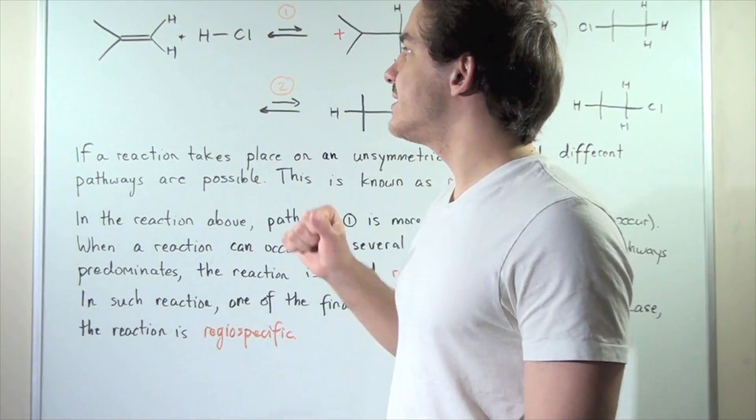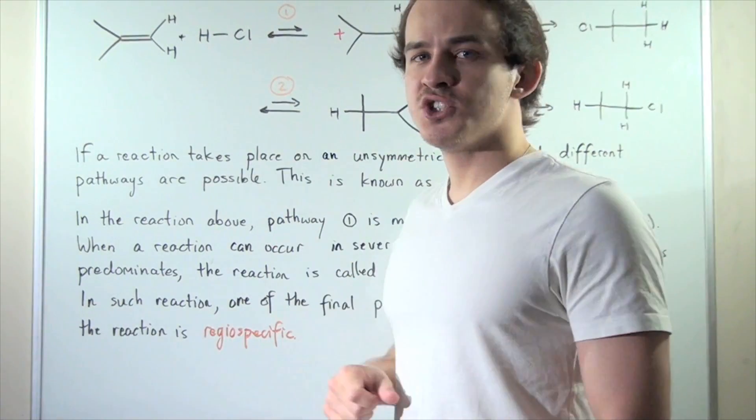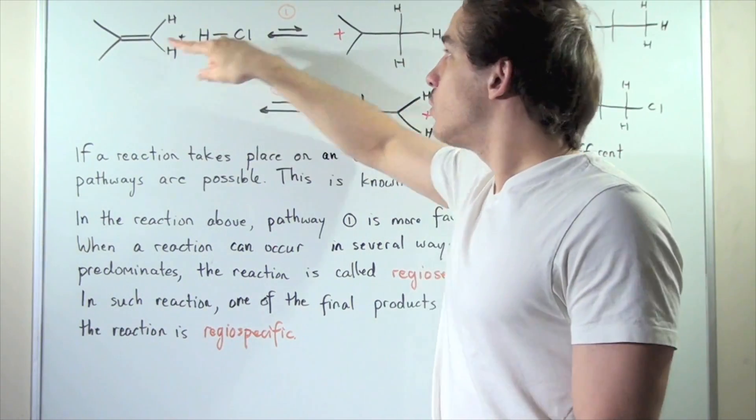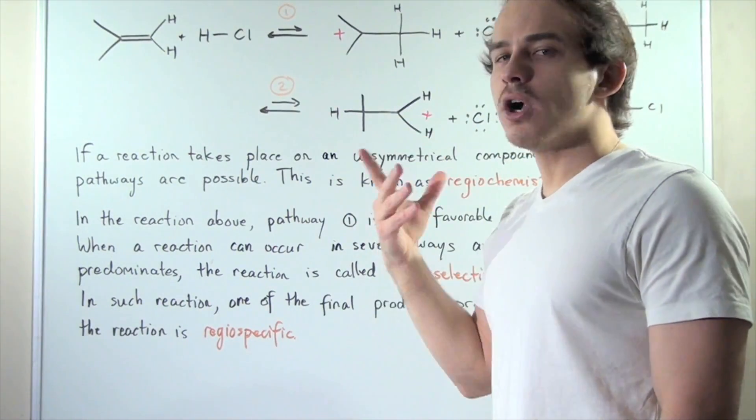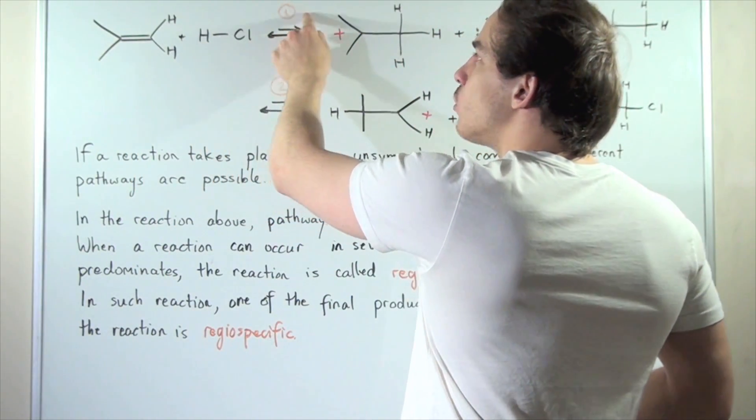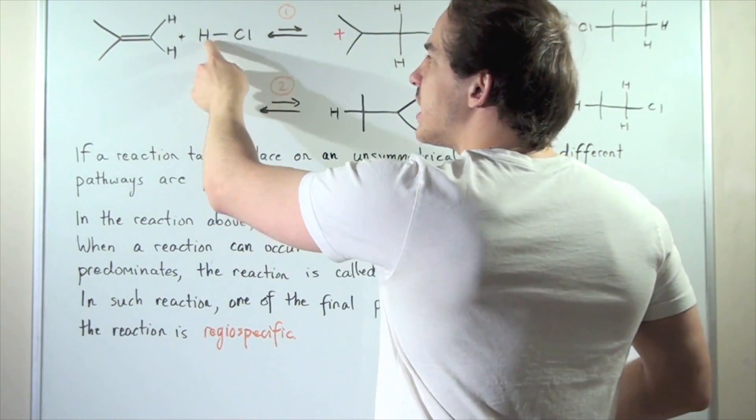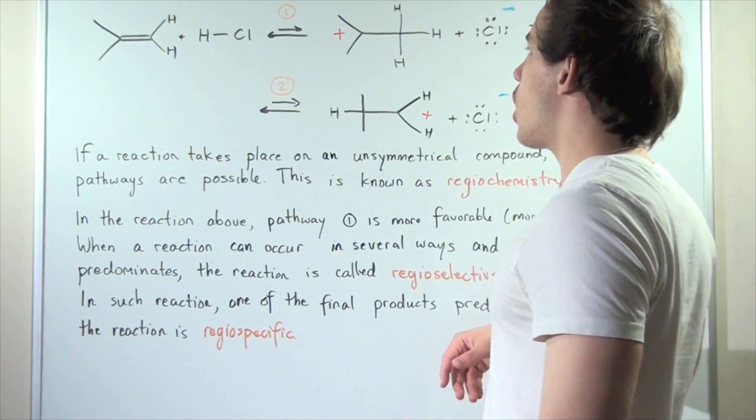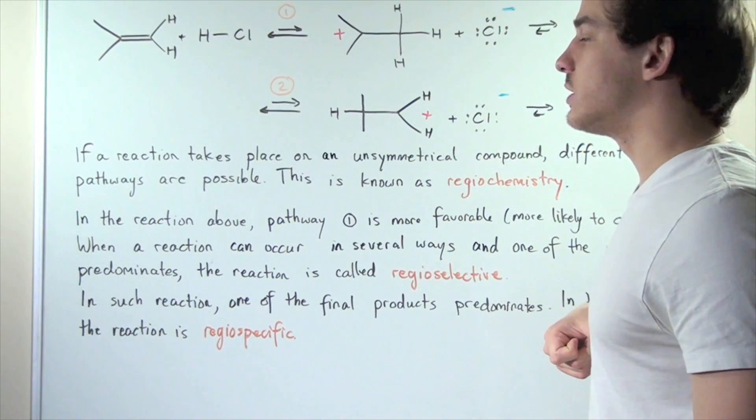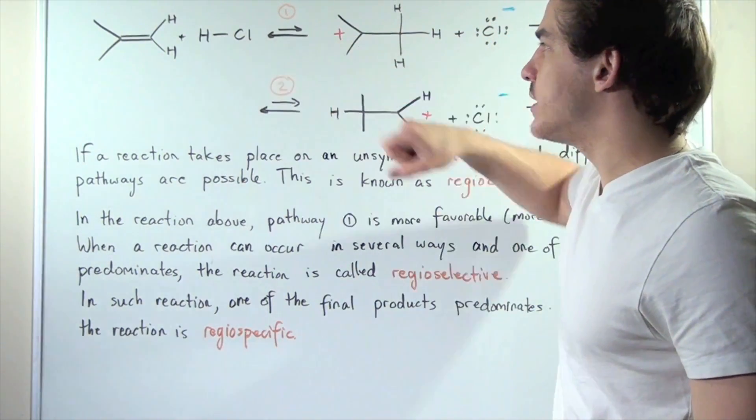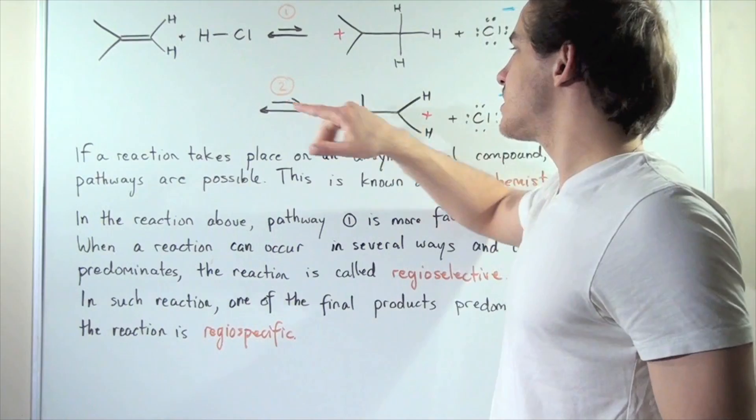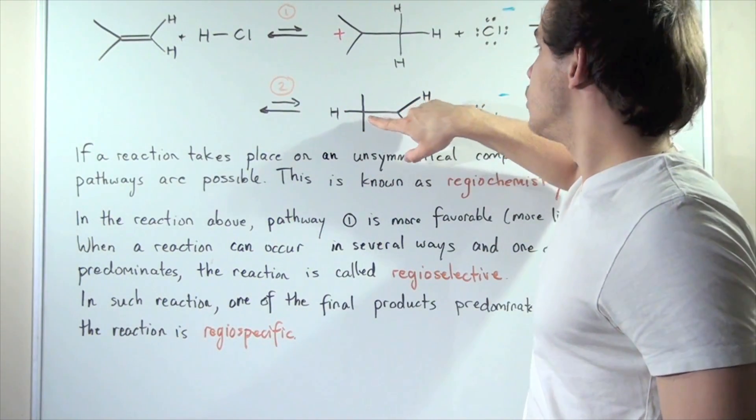Let's examine the following example. We have hydrochloric acid reacting with an alkene. Two different pathways are possible. In other words, this Lewis base can take this H atom and follow pathway one, in which the H atom attaches to the second carbon of the double bond. Or it can take pathway two, in which the Lewis acid takes this H and attaches that H to the other side of the double bond, to this carbon.